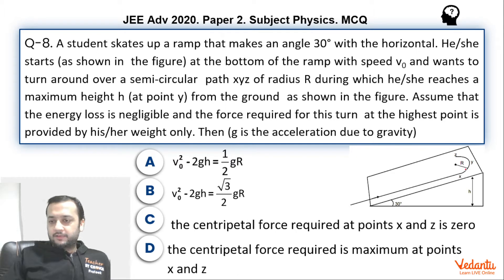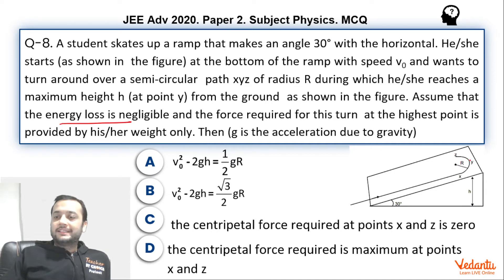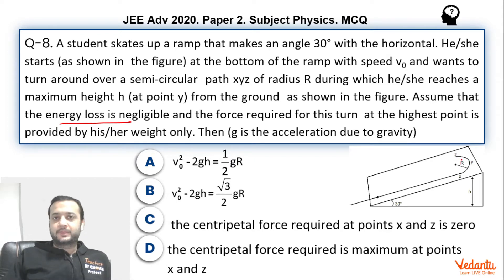The particle will make a circular motion and then come back. The top point, which is Y, is at a height H from the bottom. We have to ignore any energy loss, and at the top point the centripetal acceleration is going to come from the weight of the particle only. Using these conditions we have to check the options.